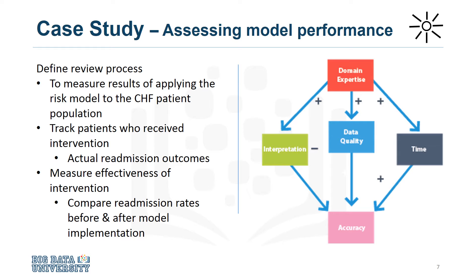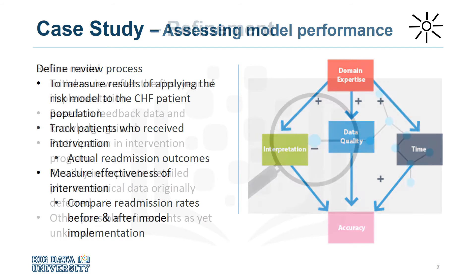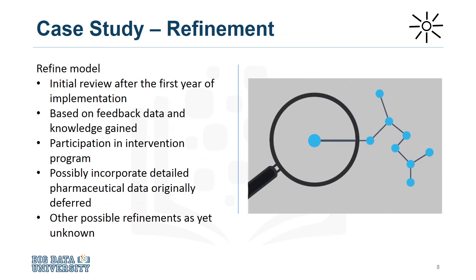Instead, readmission rates would be compared before and after the implementation of the model to measure its impact. After the deployment and feedback stages, the impact of the intervention program on readmission rates would be reviewed after the first year of its implementation. Then the model would be refined based on all the data compiled after model implementation and the knowledge gained throughout these stages.